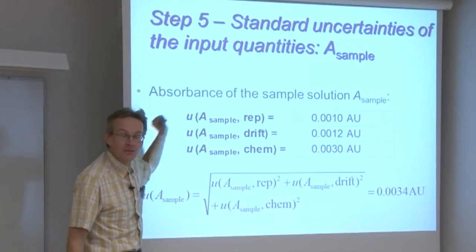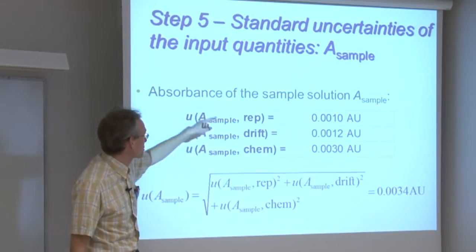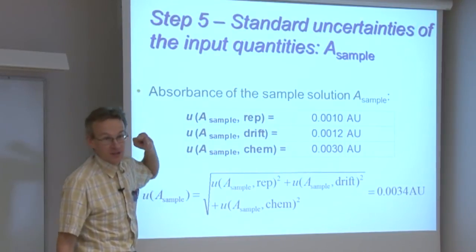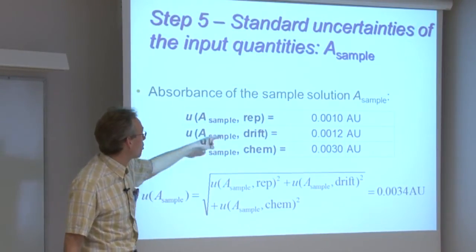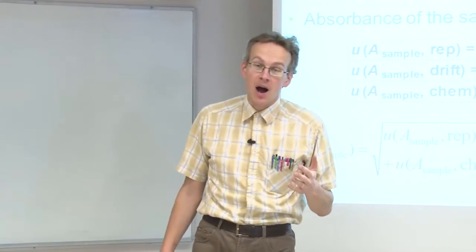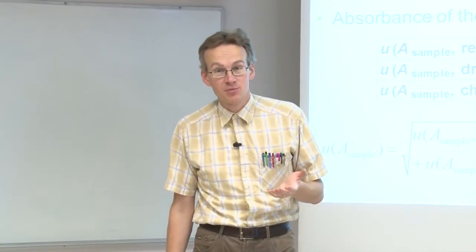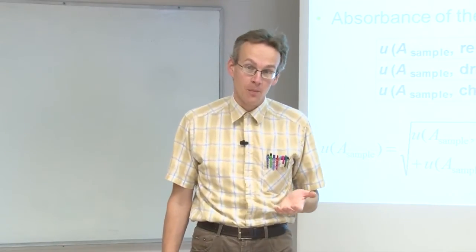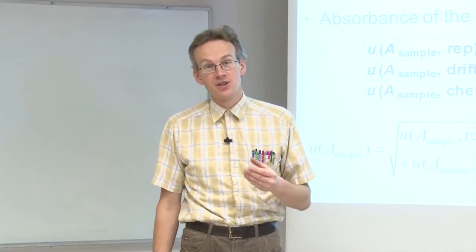Repeatability of the photometric reading, possible drift of the photometric properties, and also possible chemical interferences which can come either by increased absorbance because some other compounds also absorb at the used wavelength, or by decreased absorbance because something causes the dye either not to form or to partially decompose.